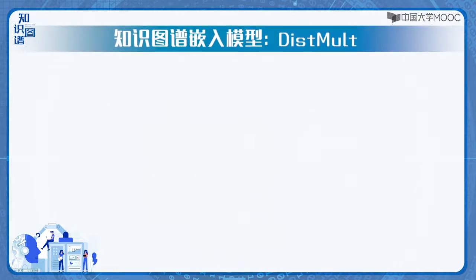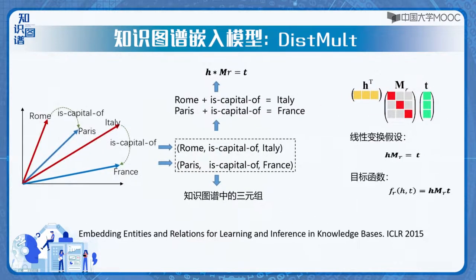另外一类知识图谱嵌入表示学习模型，是以DistMult为代表的基于线性变换的学习模型。与TransE采用加法不同，DistMult采用乘法，并用一个矩阵而非一个向量来表示关系。如果一个三元组H、R、T存在，那么H的向量乘以R的矩阵应该接近于T的向量表示。其他关于评分函数和损失函数的定义都和TransE一样。